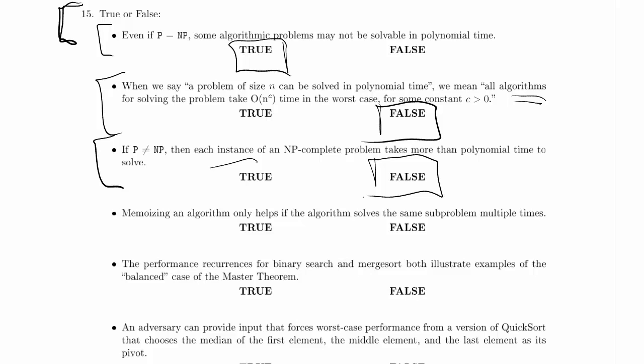Memoizing an algorithm only helps if the algorithm solves the same subproblem multiple times. That is definitely true. If it only solves the subproblem once, why bother making a record of the answer to that subproblem? Now, you could argue this and you could say, what if I'm memoizing across multiple calls to the algorithm, and different calls to the algorithm might solve the same subproblem multiple times. Well, okay, I agree with that.